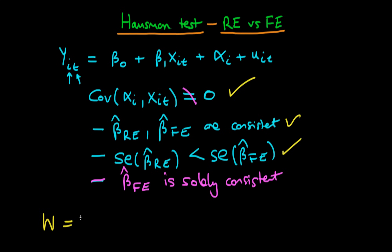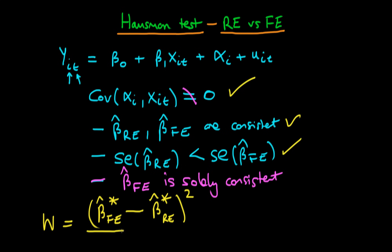The Hausman statistic for one explanatory factor is constructed as follows. The numerator is the fixed effects estimated value of beta_1 (the star indicates the actual estimated value rather than the estimator function) minus the value which random effects outputs, and we square this difference. We then divide by the variance of the fixed effects estimate minus the variance of the random effects estimate.